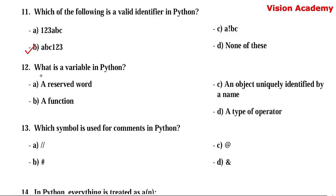Question number 12. What is a variable in Python? Option A: a reserved word. Option B: a function. Option C: an object uniquely identified by a name. Option C is the right answer.